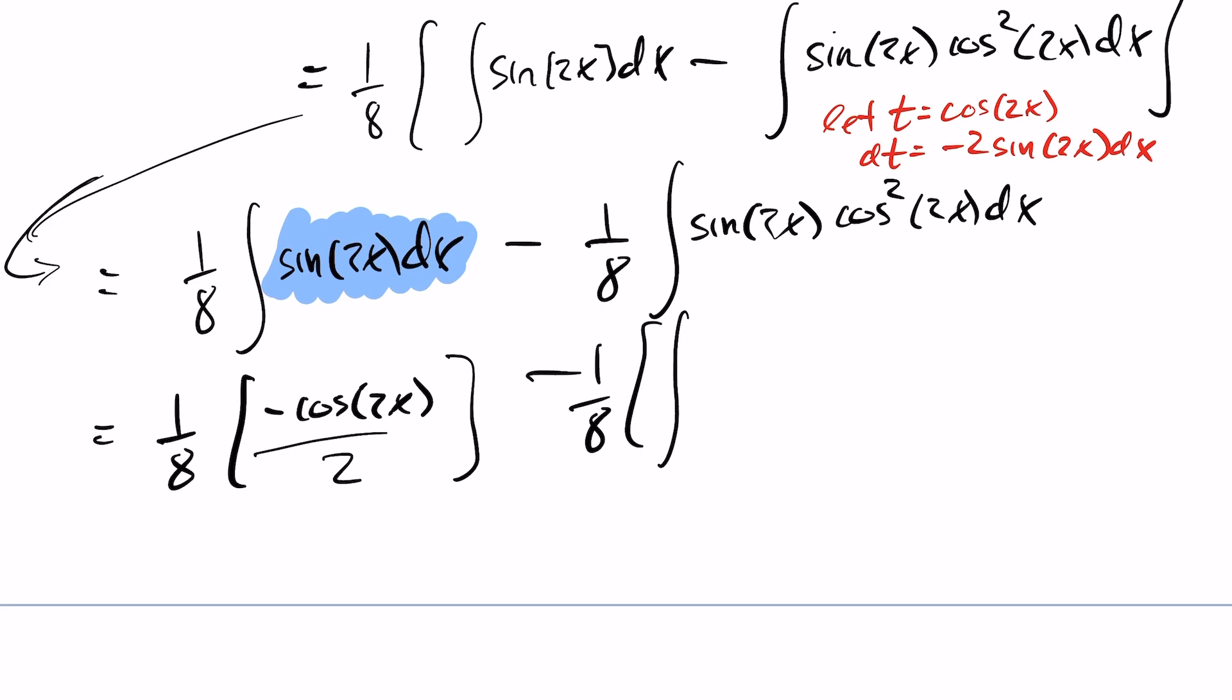Therefore from here I know that my cos of 2x I can replace with a t squared as I let t equal the cos of 2x. Therefore that's just t squared. I have a sine 2x and a dx here.